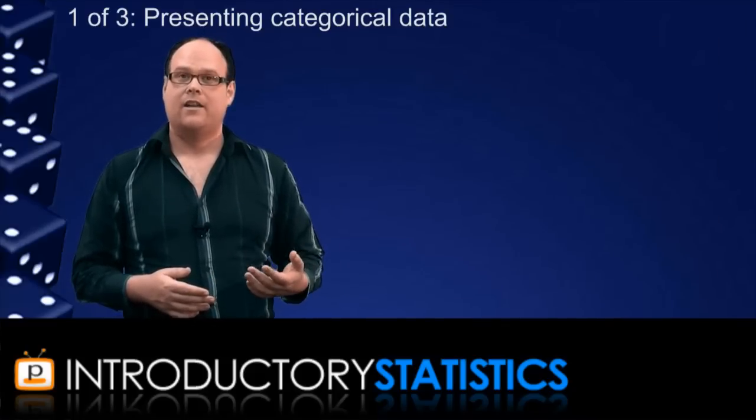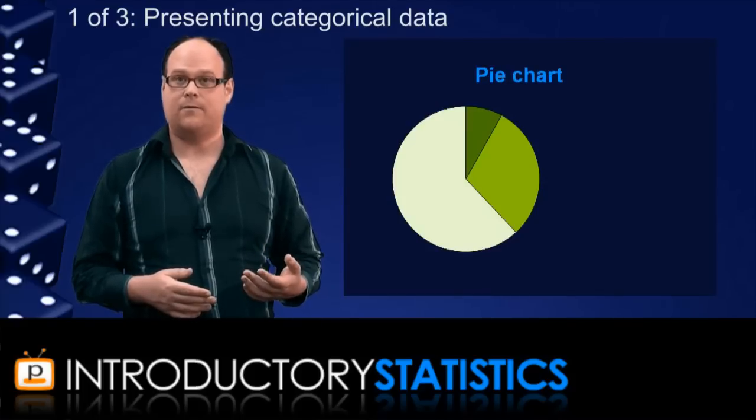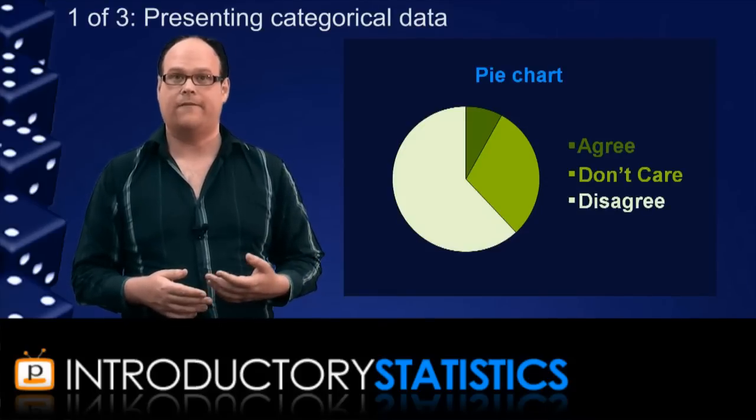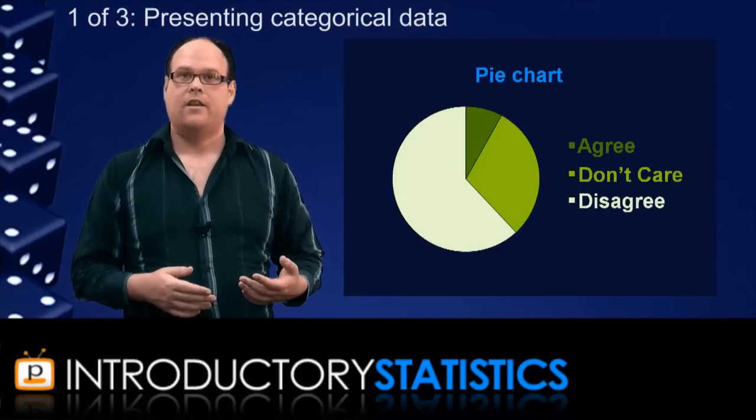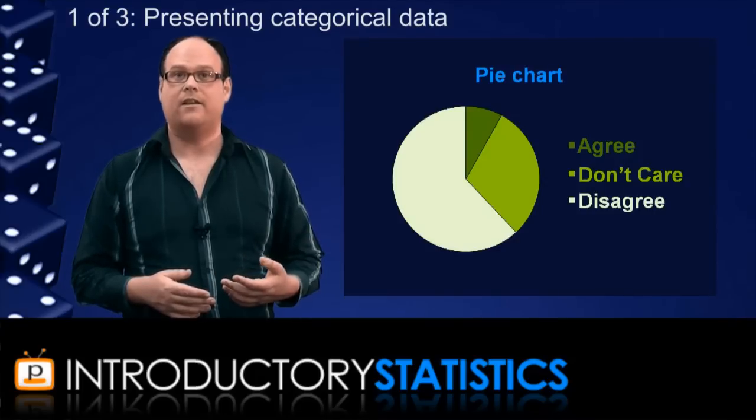But there's also the pie chart. The pie chart is a circle divided up into slices, and each slice represents one of the categories in your data. And the size of each slice represents the proportion of values that occur in each category. So, this chart gives the same information as the relative frequency table, but it does it in a way that lets us quickly look at it and get a feeling for the data.